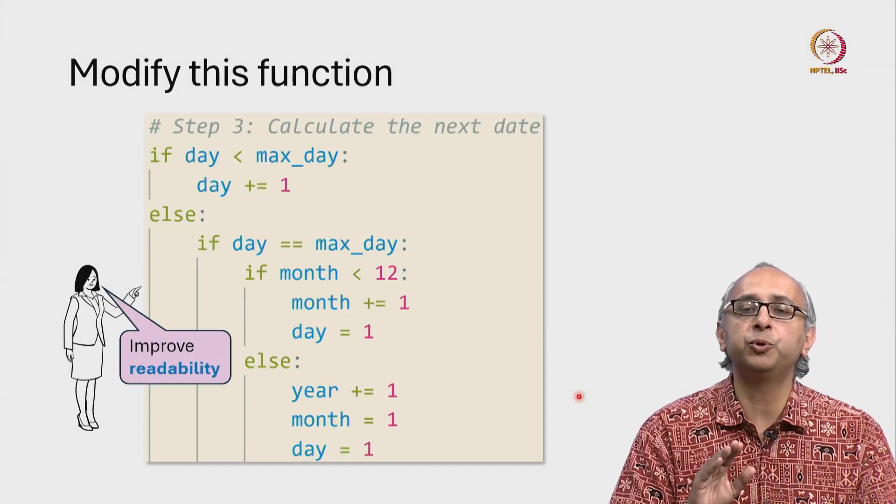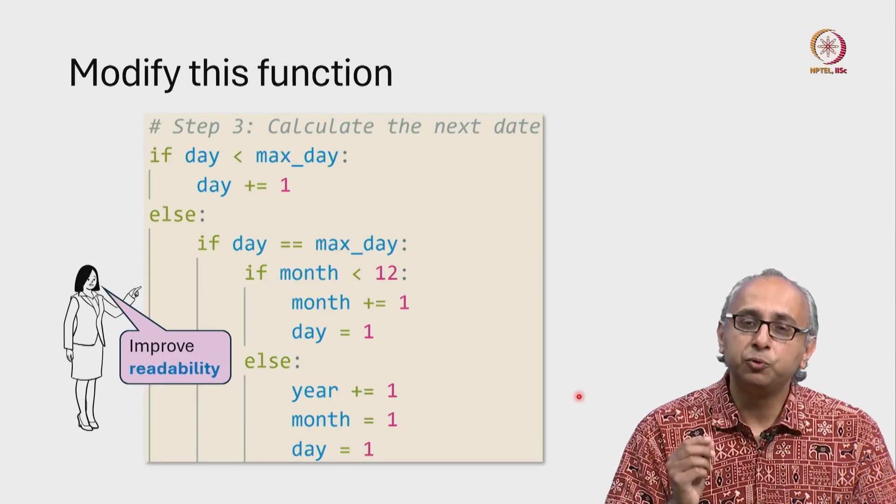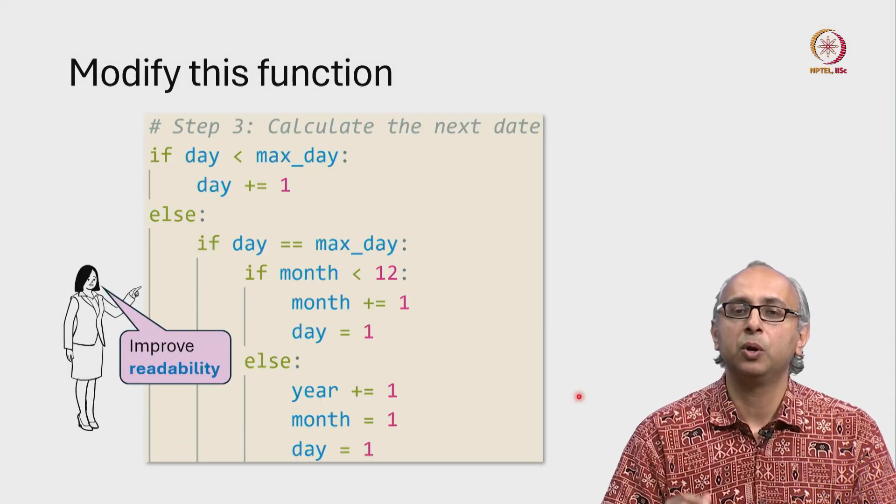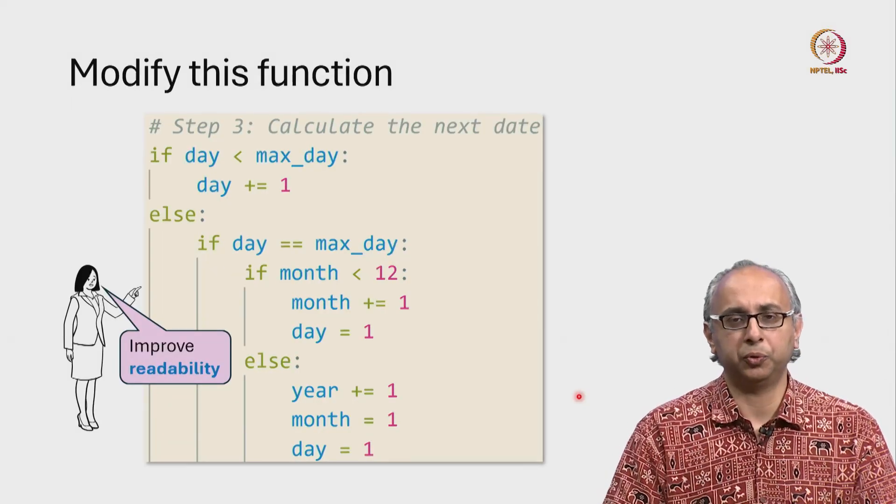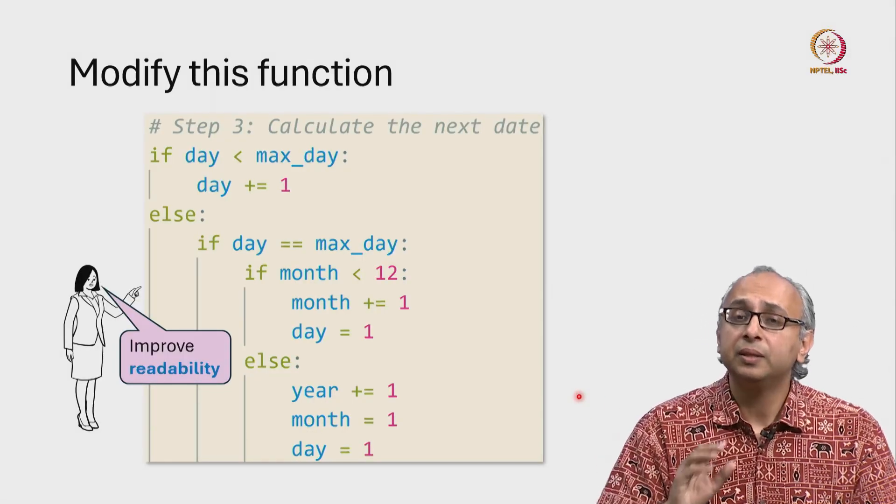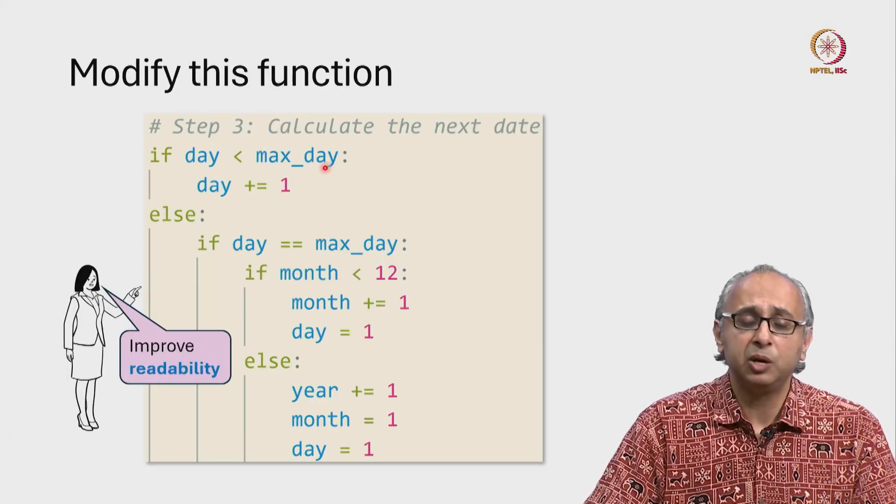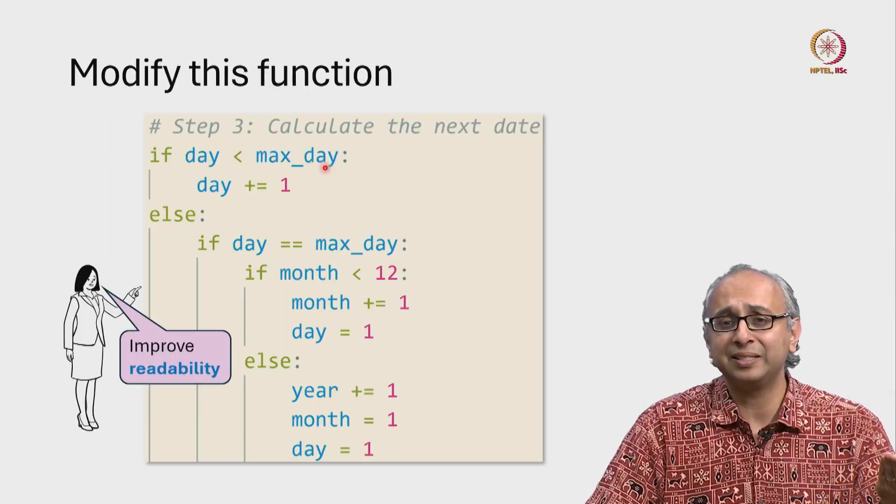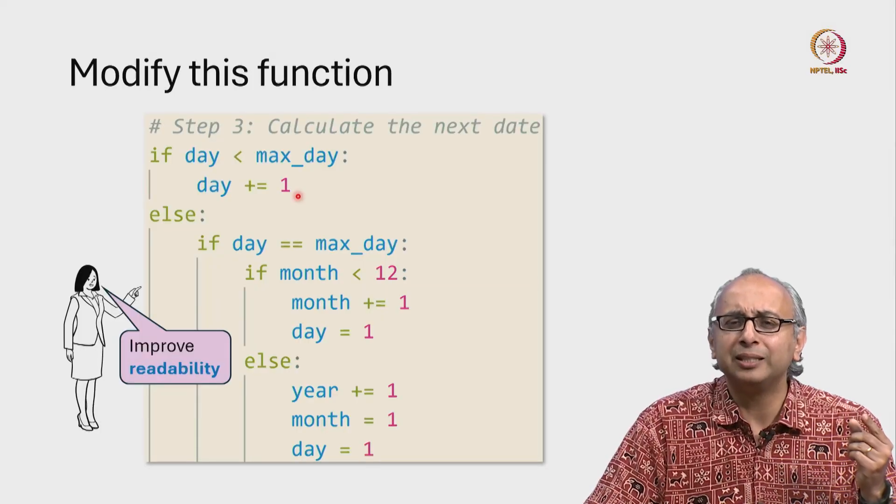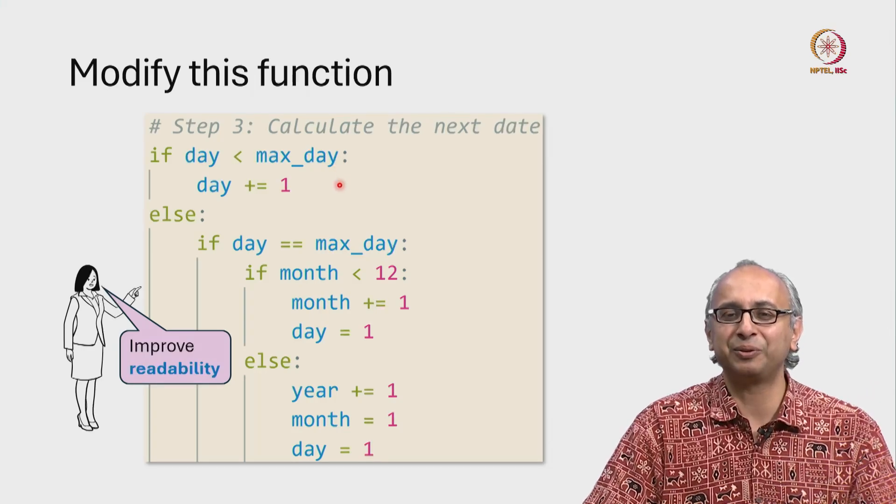Readability is extremely important in any real world software. Why? The person who wrote this code may understand what it's doing. Perhaps even months afterwards they could explain why they have written the code this way. Their explanation might go something like this: Well, I have to calculate the next day and I can do that very easily by increasing the day by 1, but I can't do that if I'm at the max day. So firstly I check if the day is less than the max day. If it is, good, I can increase the day by 1.